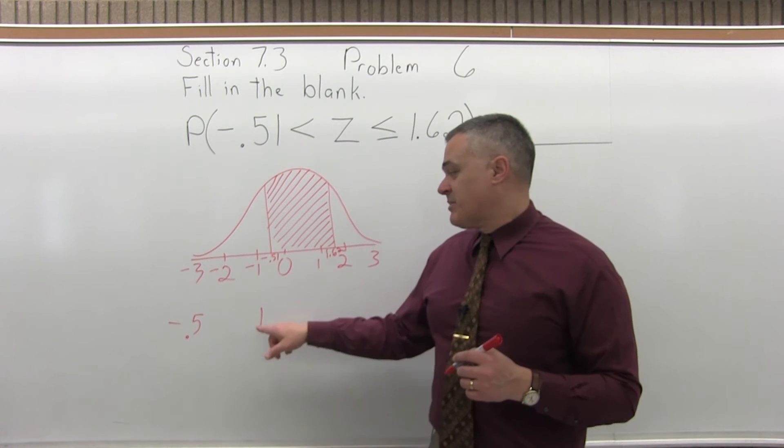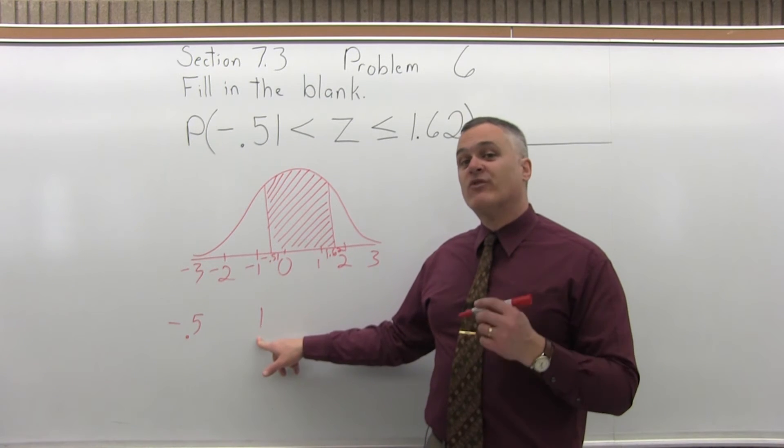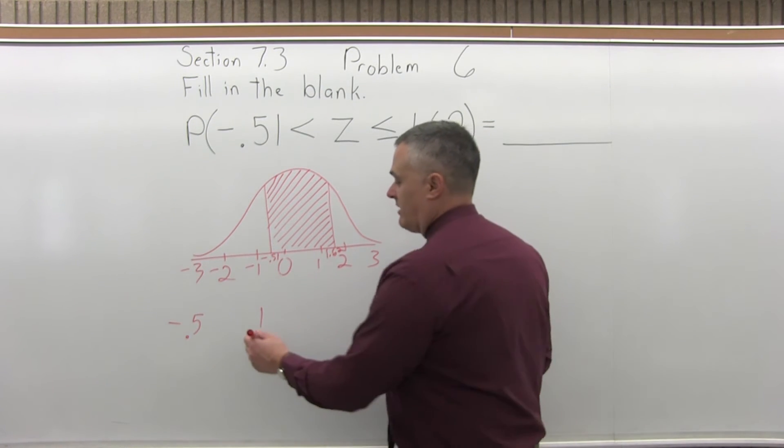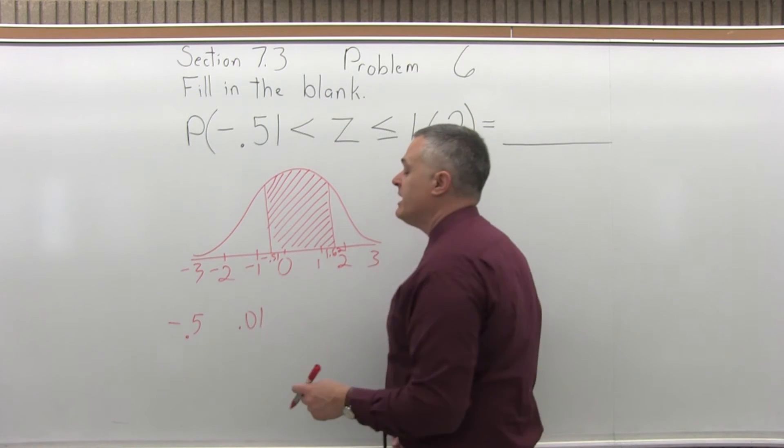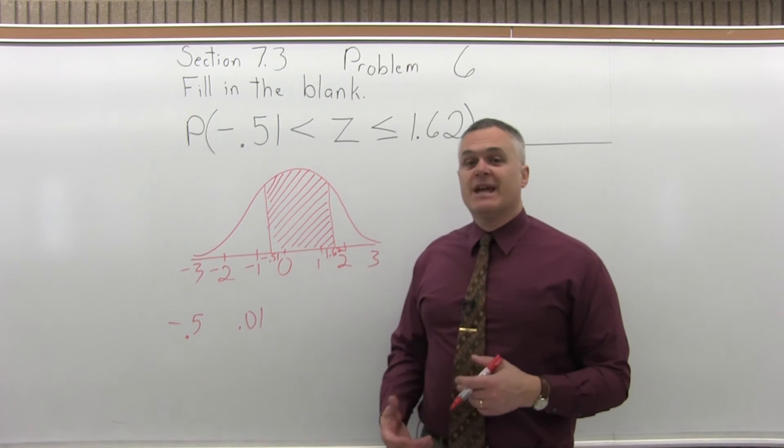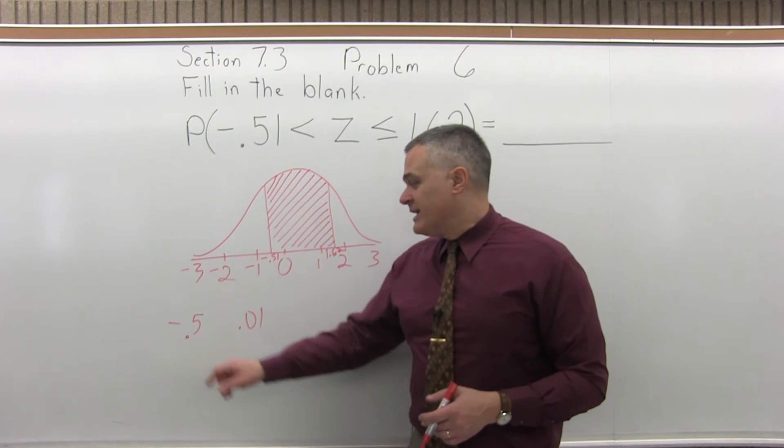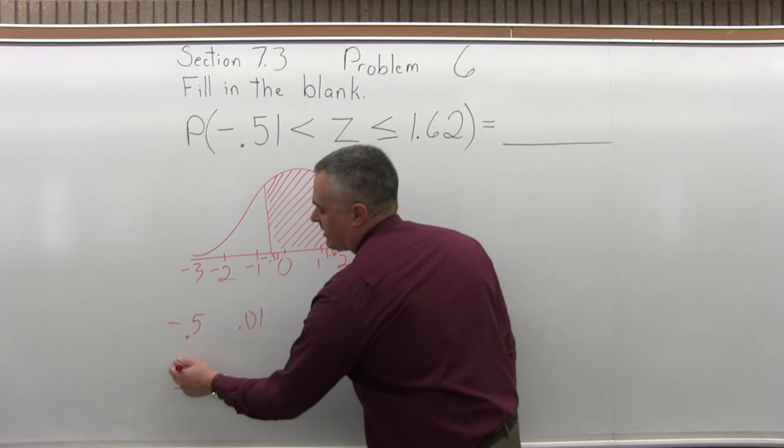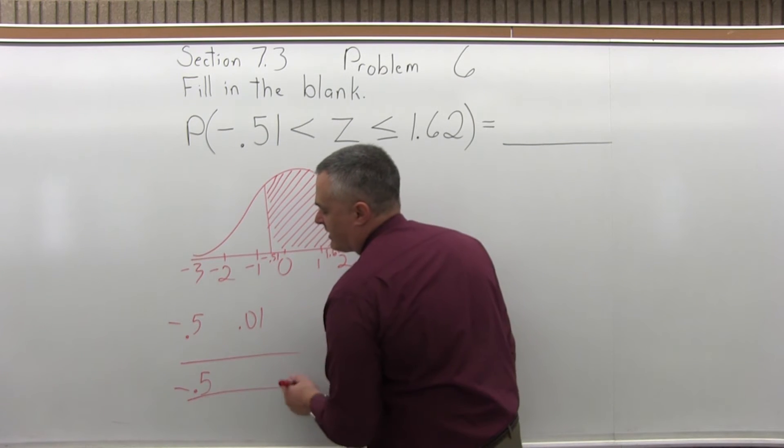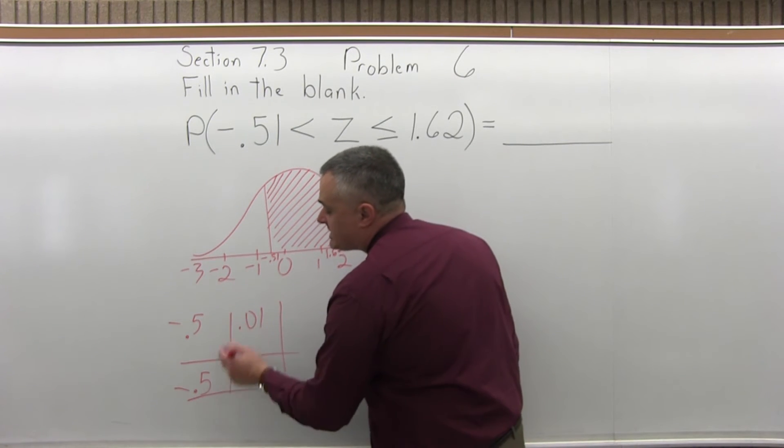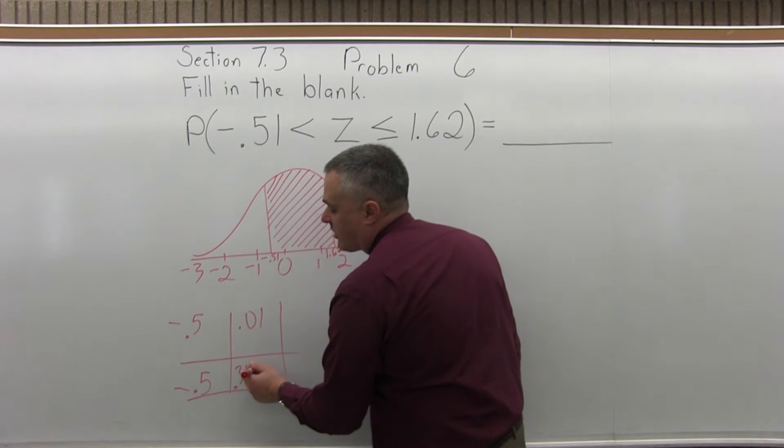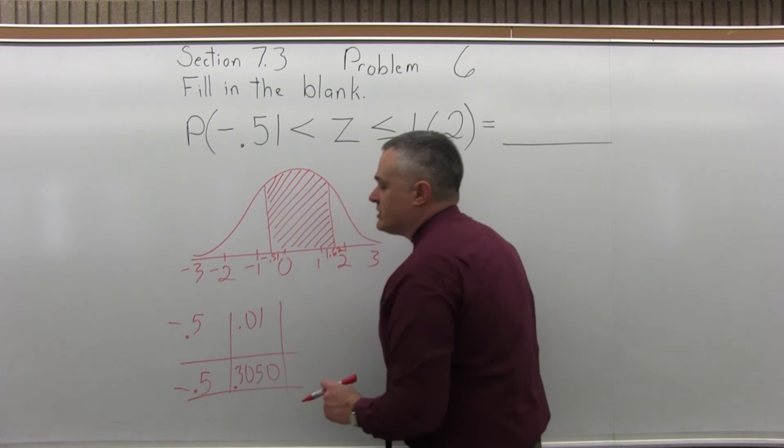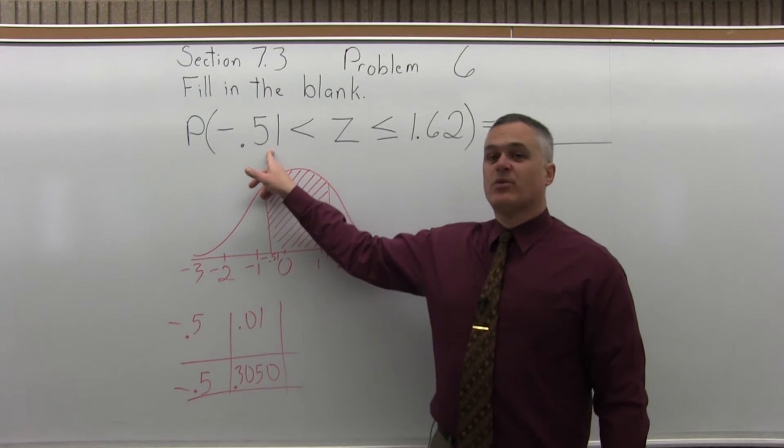Now, the next step after that is put a 0.0 in front of the rightmost digit that you pulled off. So instead of 1, it's 0.01. And now what we're going to do is go to the negative portion of the chart, look in the -0.5 row, which is down near the bottom of the negative portion of the chart, the 0.01 column. See where those two intersect, they will intersect at 0.3050. So there's the chart value for the -0.51.